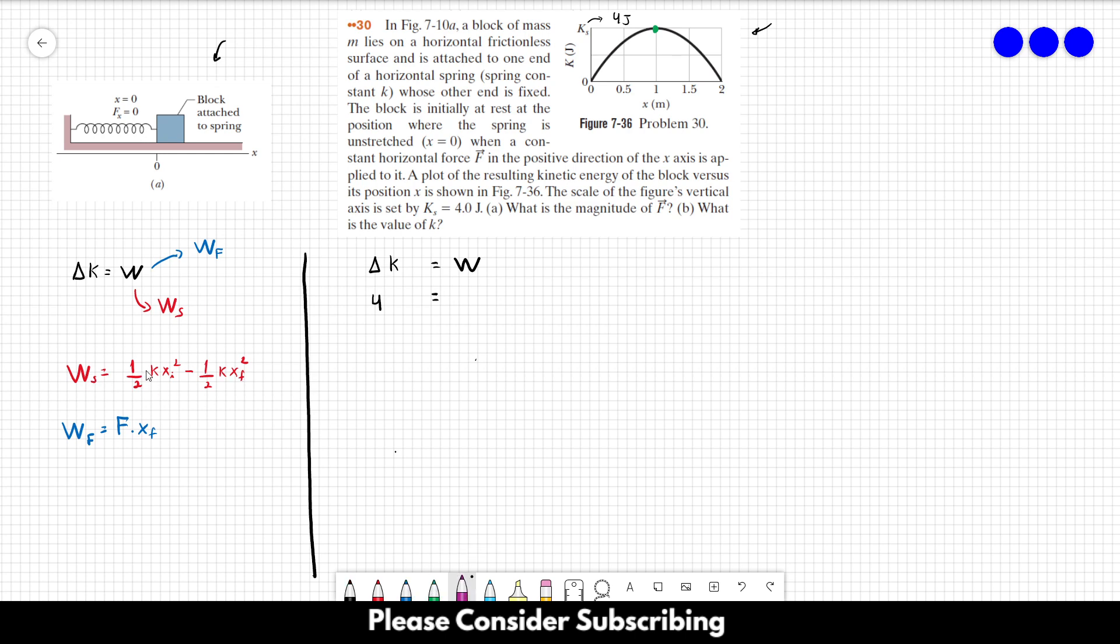However, since the initial position is always 0, this I can cross that out. So equal to minus 1 over 2k, final position is 1, 1 squared, plus F times 1.